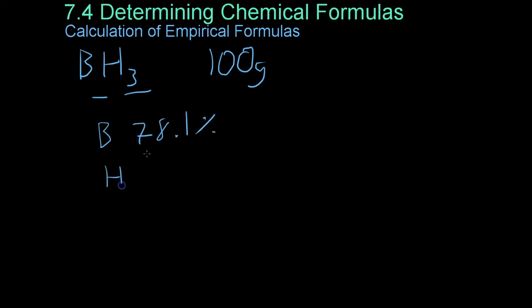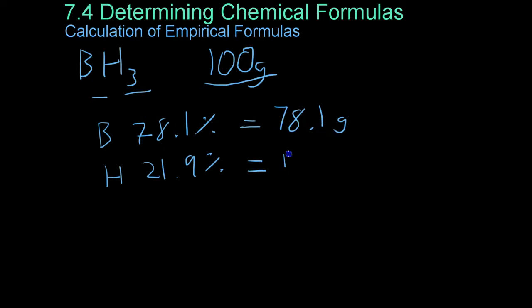and hydrogen composes the other 21.9% of the mass. And this is just through experimentation. Now, because we use a simple number like a 100-gram sample, this means that boron and hydrogen have sample weights of 78.1 grams and 21.9 grams within this 100-gram sample.